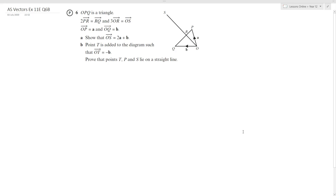We're looking at 6b. Point B is added to the diagram so that OT equals minus B. Prove that T, P, and S lie on a straight line. So there's your straight line, but to prove that T, P, and S lie on a straight line...